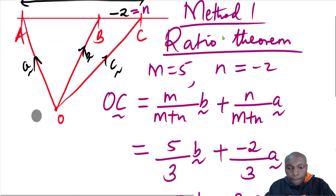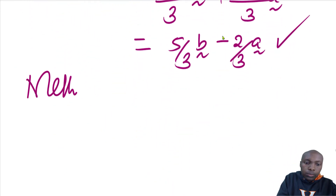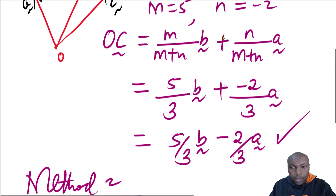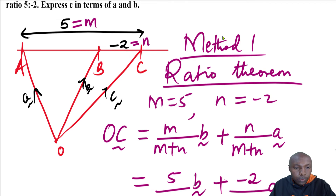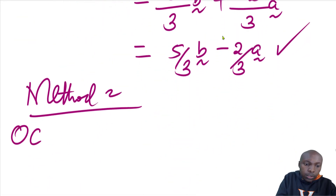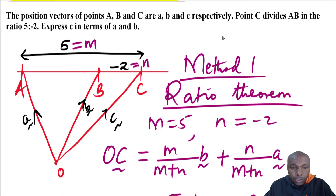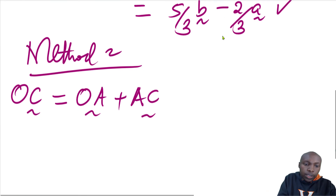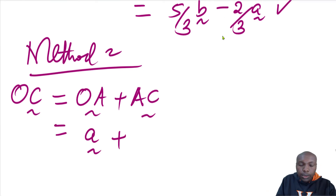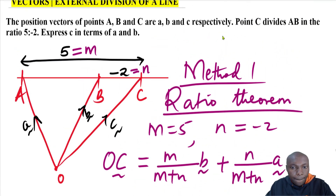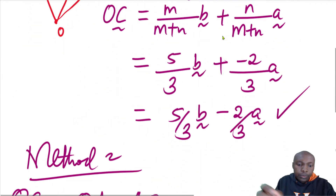Method two works as follows. We want to move from O to C, so the route we follow is: OC equals OA plus AC. So OC is given by OA plus AC. Vector OA is simply a. Now we need to find AC. Looking at the distance AC, that is 5.